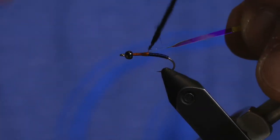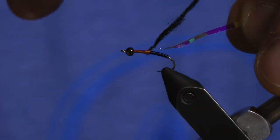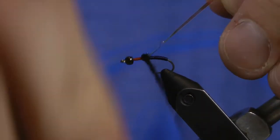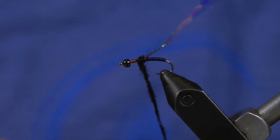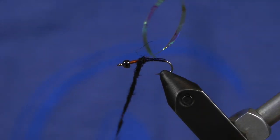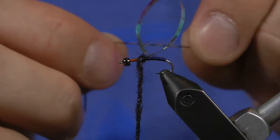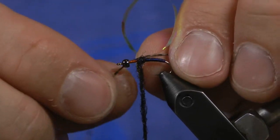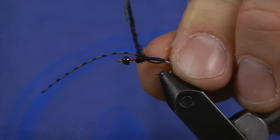Once we get that on, I'm going to wrap a couple small wraps with this black dubbing. For this specific color fly, it's going to be black dubbing. On others, the dubbing will get as close to matching the color of the rest of the fly as we can get.